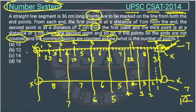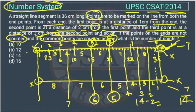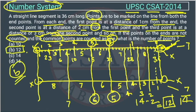However, there are 2 common points that have been counted twice. Since common points are counted only once, we deduct 2. So the final answer is 14 minus 2 = 12. Option B is the correct answer.